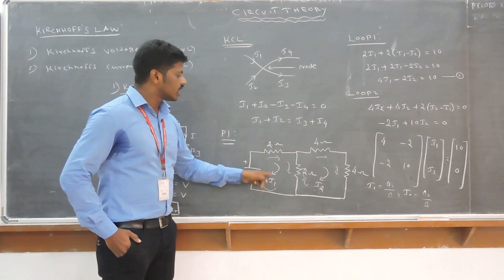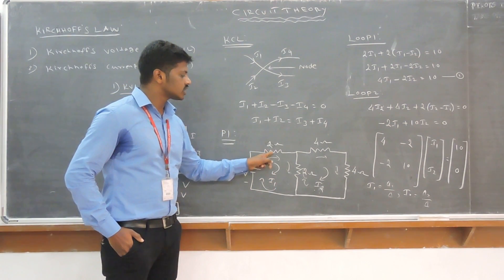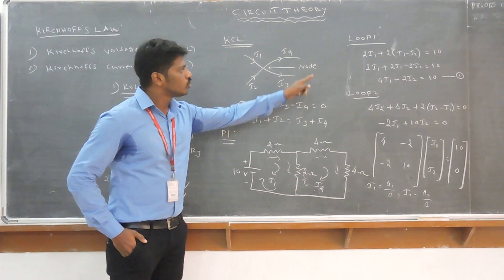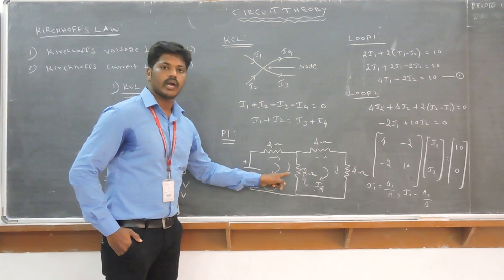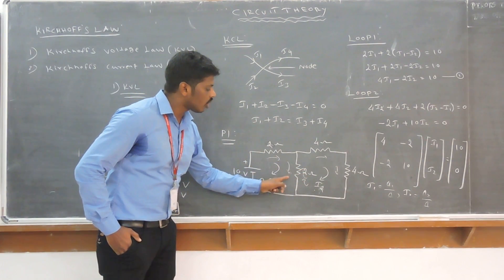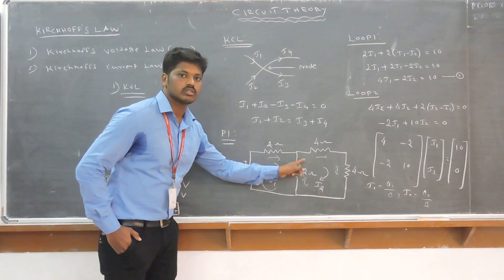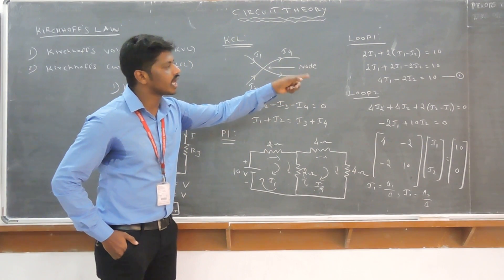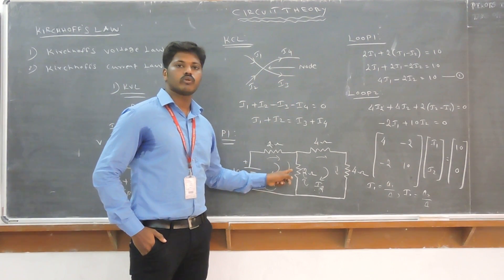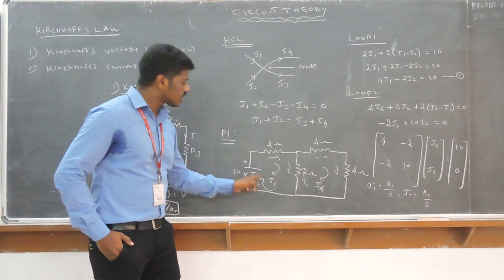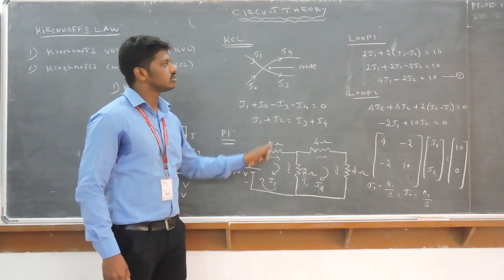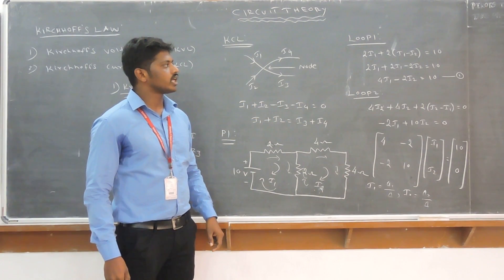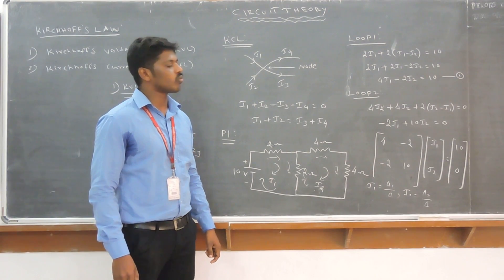The I1 current is flowing through the 2-ohm resistance. Here, 2×I1 plus the 2-ohm resistance shared between loop I1 and loop I2. I1 current is dropping and I2 current is rising, so they are in opposite directions. Therefore it is represented as 2×(I1 − I2). The rising voltage is 10 volts. Simplifying: 4×I1 − 2×I2 = 10. That is equation number 1.